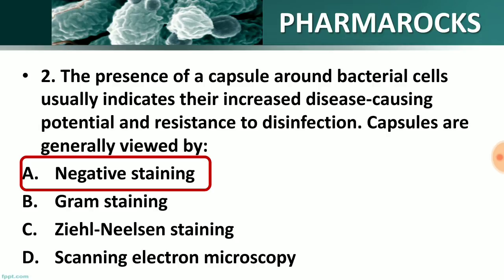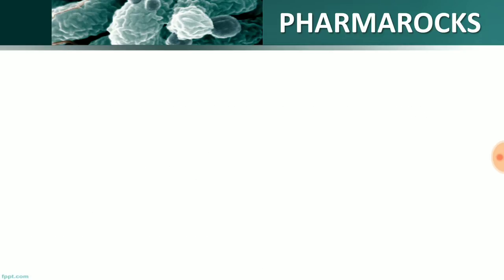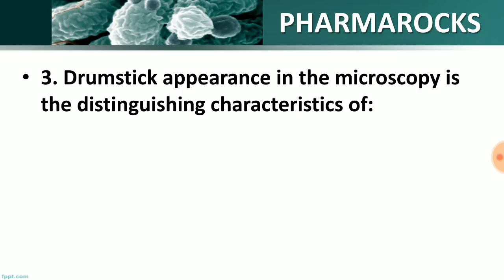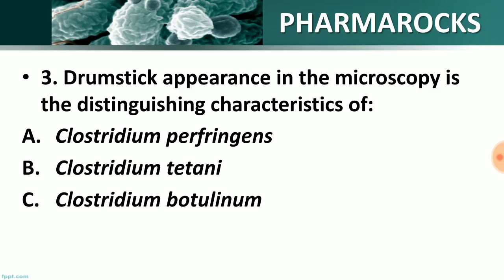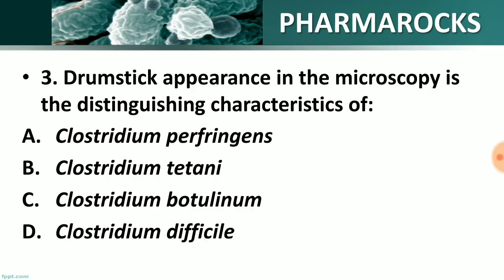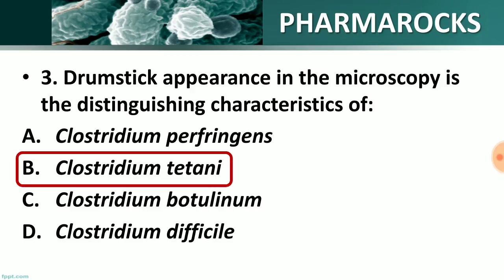Question number 3: Drumstick appearance in microscopy is the distinguishing characteristic of which organism? Options: A) Clostridium perfringens, B) Clostridium tetani, C) Clostridium botulinum, D) Clostridium difficile. The right answer is option B — Clostridium tetani. Drumstick appearance in microscopy is the distinguishing characteristic of Clostridium tetani.